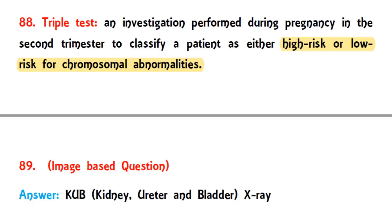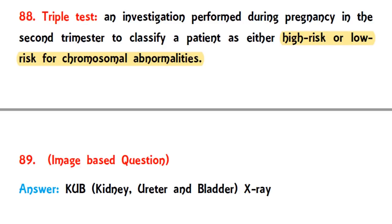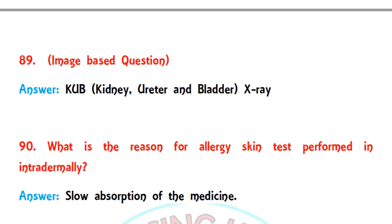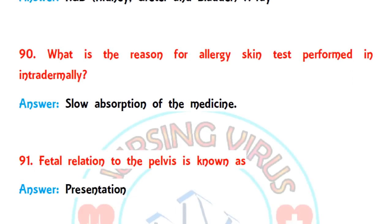Question 89 is an image-based question. They provided an X-ray of KUB — kidney, ureter, and bladder — and asked what kind of identification can be done with that X-ray image.